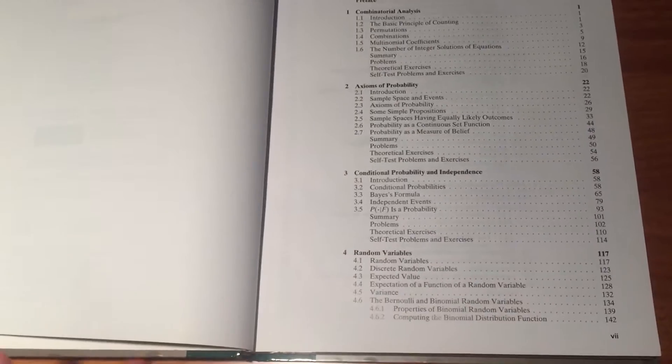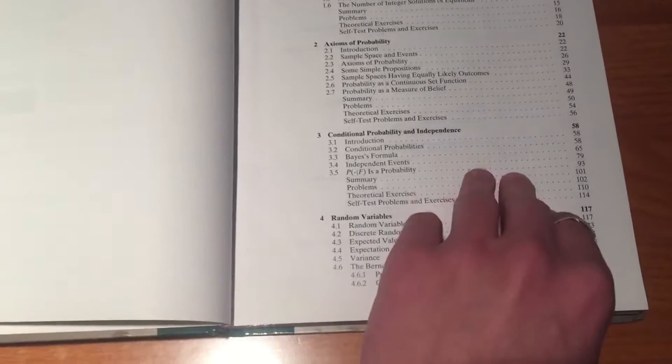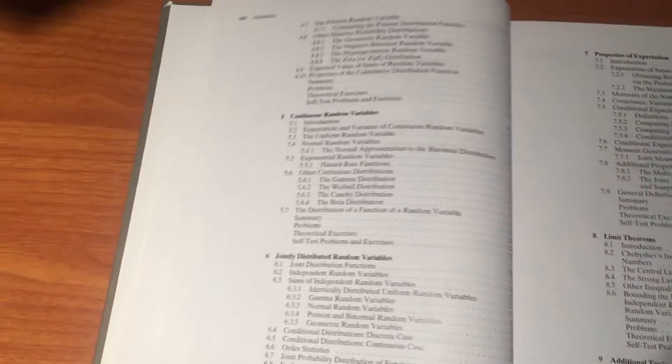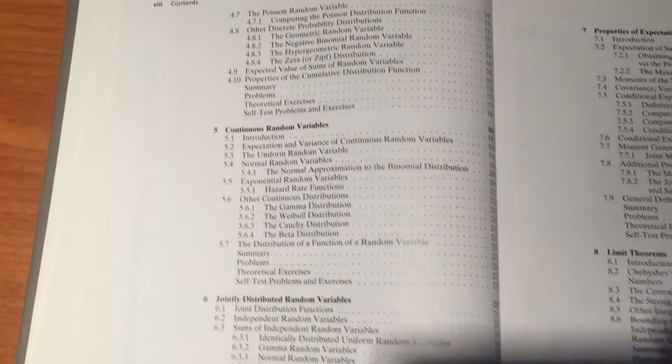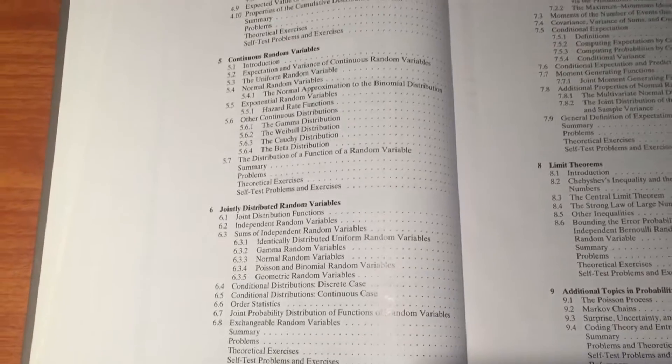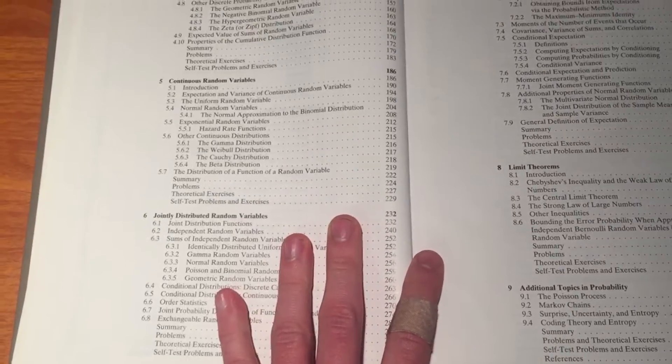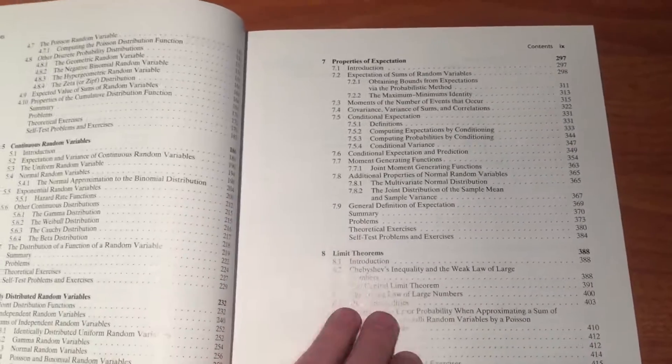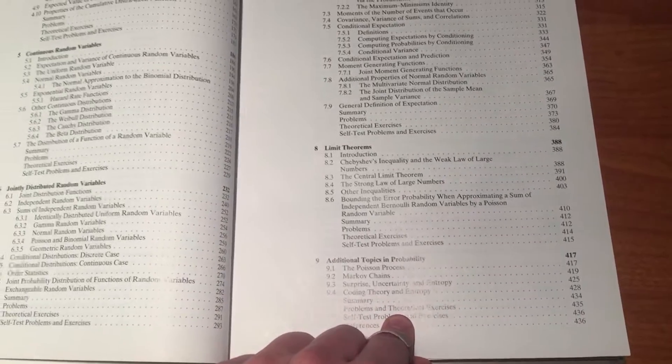And then the biggest probably thing are random variables. So you'll learn about discrete versus continuous random variables and all the different probability distributions. Joint probability distributions, expectation, the limit theorems, so like the central limit theorem.